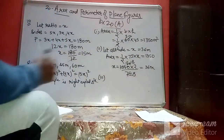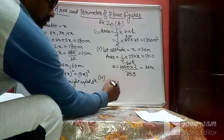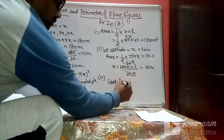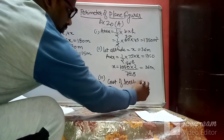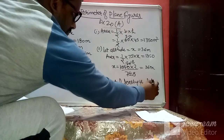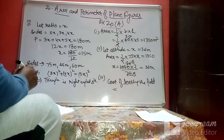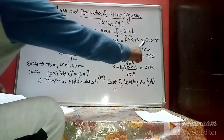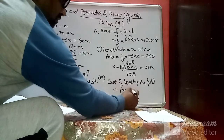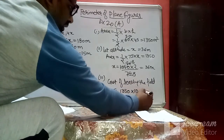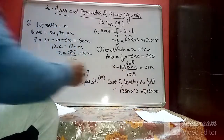For part three, the cost of leveling the field. The cost per square meter is ₹10 and the area is 1350 m², so total cost = 1350 × 10 = ₹13,500.